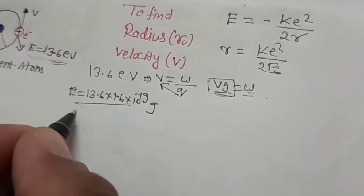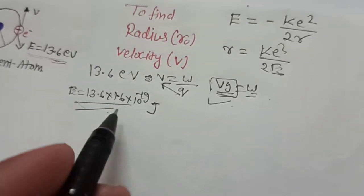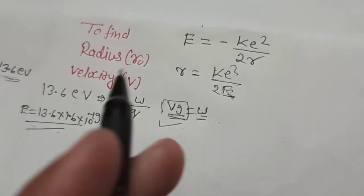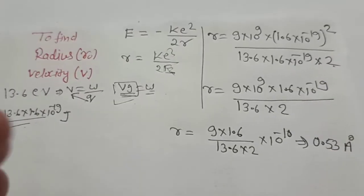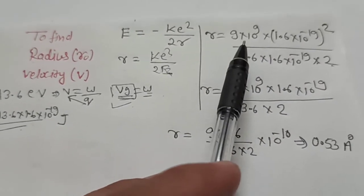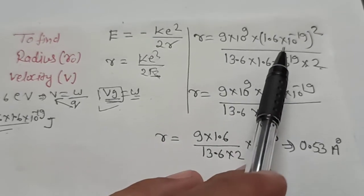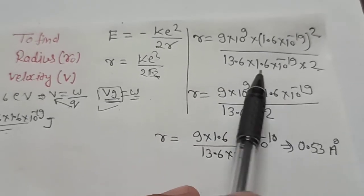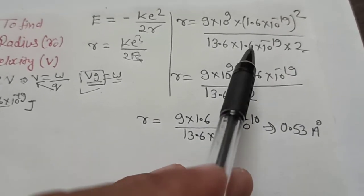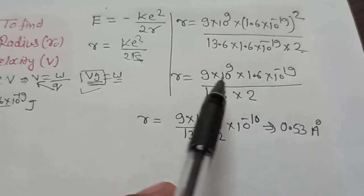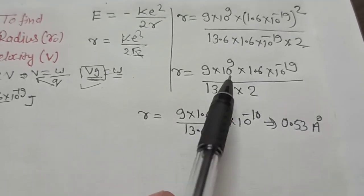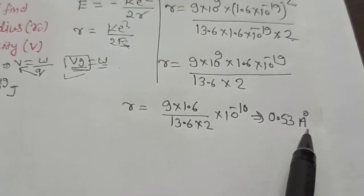Now we substitute all the values into the formula. The value of k is 9×10⁹, the electron charge value is substituted, and we use the energy value we found, all divided by 2. We can see that 1.61 will cancel, and the remaining power will be 10 to the minus 10, giving us the remaining value after solving.